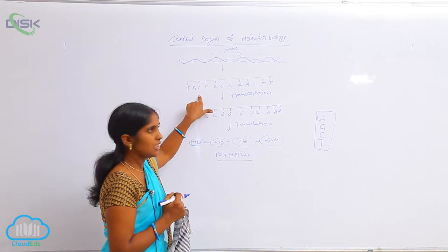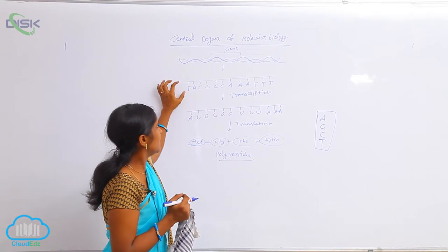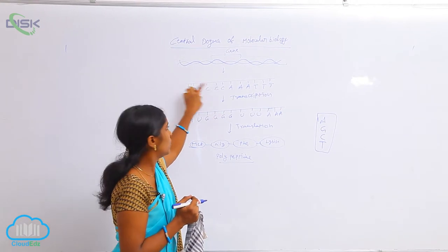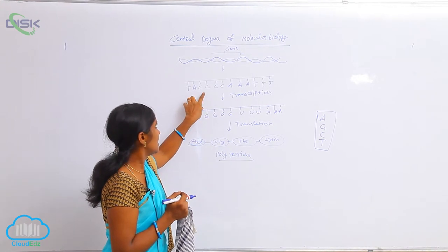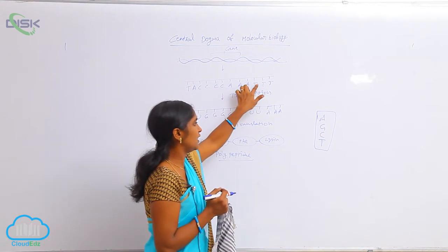So here is DNA. You see here DNA. The DNA has some genetic code here. So that is T, A, C, C, C, C, C, A, A, A, T, T, T.